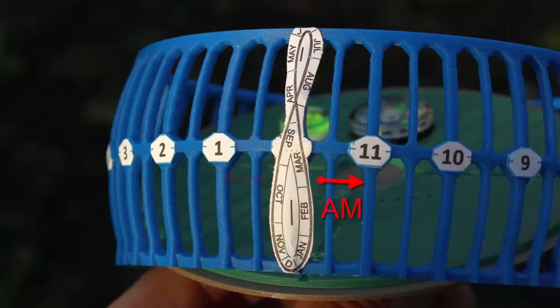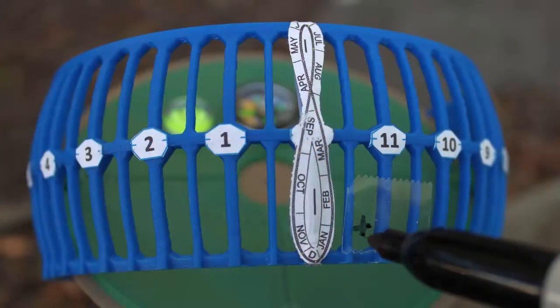Go either right or left to reach the current time. Mark the intersection of the date and time using a piece of tape and a marker pen.